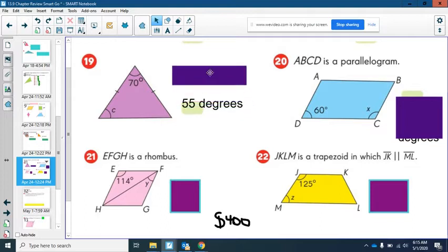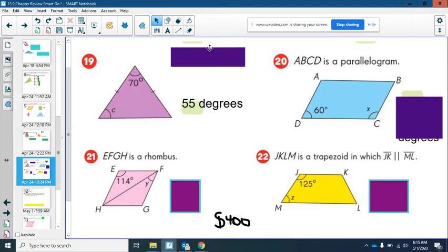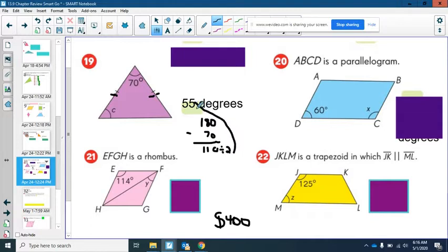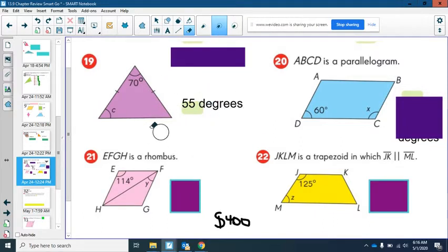Okay, here's number 19. 55 degrees. So what you would do here is you would notice that these two sides are the same. So you could do 180 minus 70. And you get 110. And you divide that by 2. And that's where you come up with the 55. Because this angle and this angle are congruent. Okay, so that one. 55 degrees for number 19. You're looking at an isosceles triangle, right?